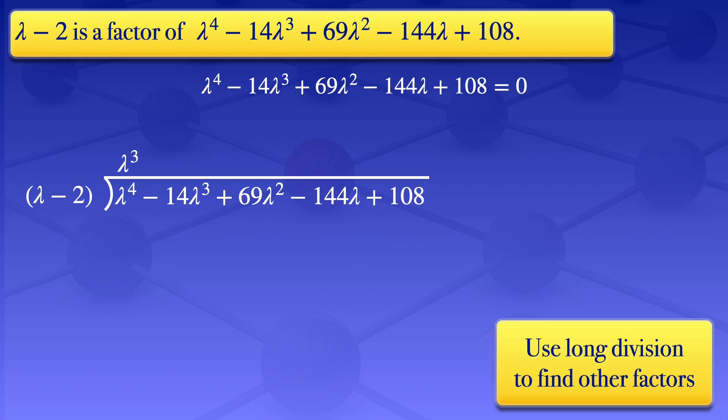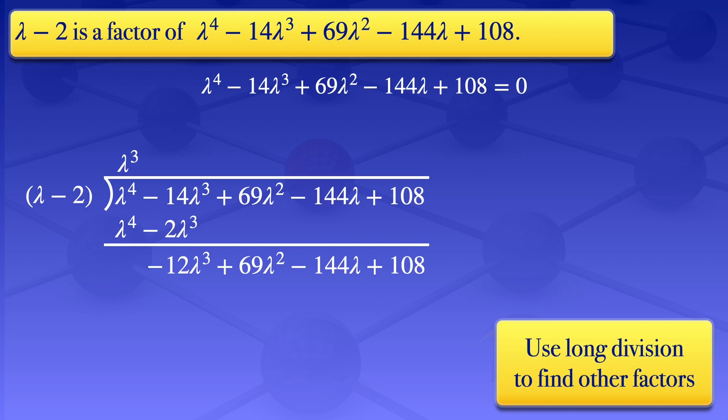Multiplying λ³ by (λ - 2) gives λ⁴ - 2λ³. Subtracting from above: λ⁴ - λ⁴ = 0, and -14λ³ - (-2λ³) = -12λ³. Bringing down the remaining terms gives -12λ³ + 69λ² - 144λ + 108.